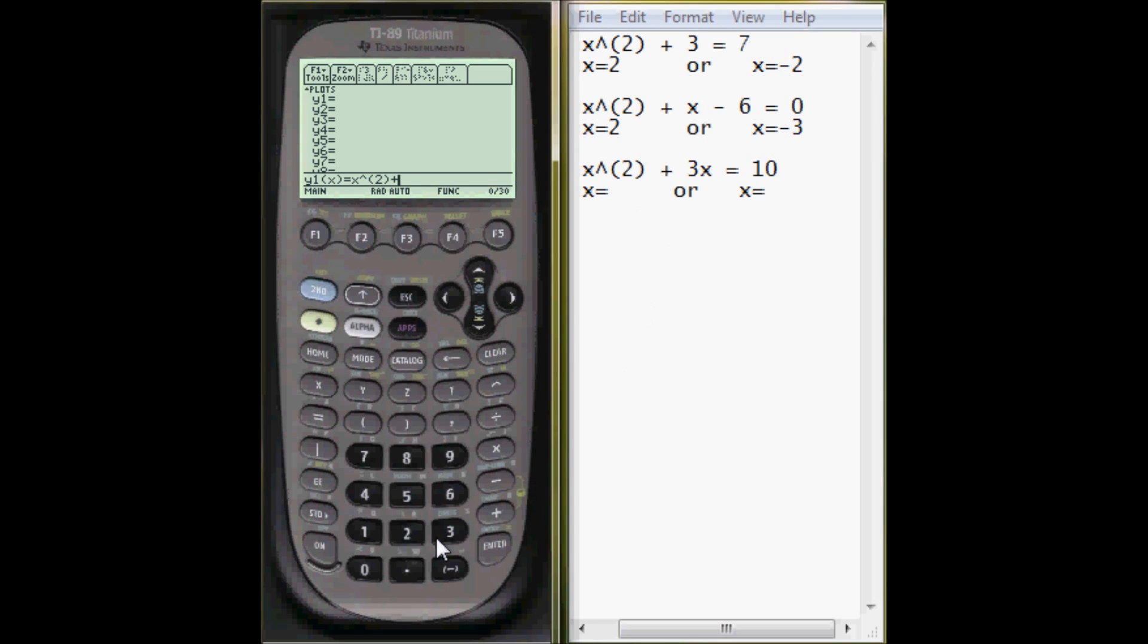Plus 3x. So plus 3x, enter. And I'll enter the second half of the equation, it's y2. y2 equals 10. Now, let's graph this. Green diamond and F3. It'll say busy again, and we'll graph our two lines.